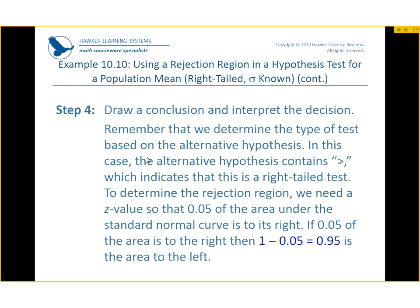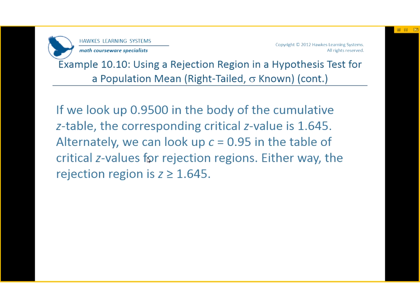Now we have to draw conclusions and interpret our decisions. We can determine the type of test based on the alternative hypothesis. In this case, the alternative hypothesis contains a greater-than symbol, which indicates it's a right-tailed test. To determine the rejection region, we need the Z value so that 0.05 of the area under the standard normal curve is to the right. If 0.05 of the area is to the right, then 1 minus 0.05 equals 0.95 is the area to the left. So we look up 0.9500 in our Z table and get a critical value of 1.645.